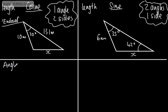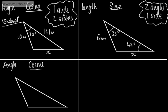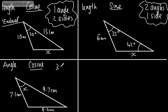Now let's look at finding a missing angle. Looking at the cosine rule, I think it's easier to define whether we use the cosine rule before anything else. I'm going to call this angle x. Let's say the sides are 7.1 centimeters, 8.3 centimeters, and 9.7 centimeters. To use the cosine rule to find a missing angle, we will be given three side lengths — three known sides — and that allows us to use the cosine rule to find the missing angle.